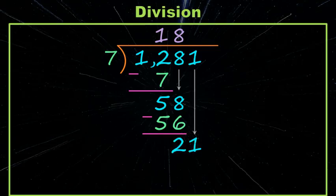We bring down the one and then we say does seven go into 21? Why yes, yes it does. And it goes three times. And seven times three is, anyone? Hello? Is 21. When we subtract there's nothing left over and that's how we know we're done.